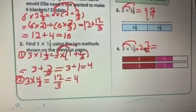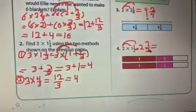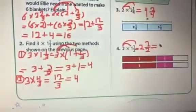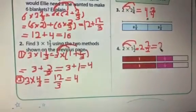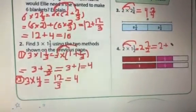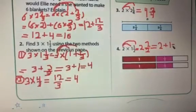2 over 4 simplifies — 2 divided by 2 is equal 1. So 2 over 4 equals 1 over 2. Then 4 plus 1 over 2 equals 4 and 1 over 2.